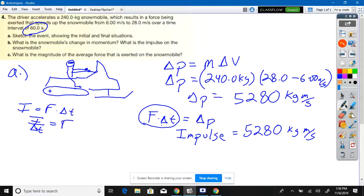Is your average force. So now 5,280 kilogram meters per second divided by 60 seconds is your average force. Okay, so what do you got? 88 newtons, right? Okay, so 88 newtons.